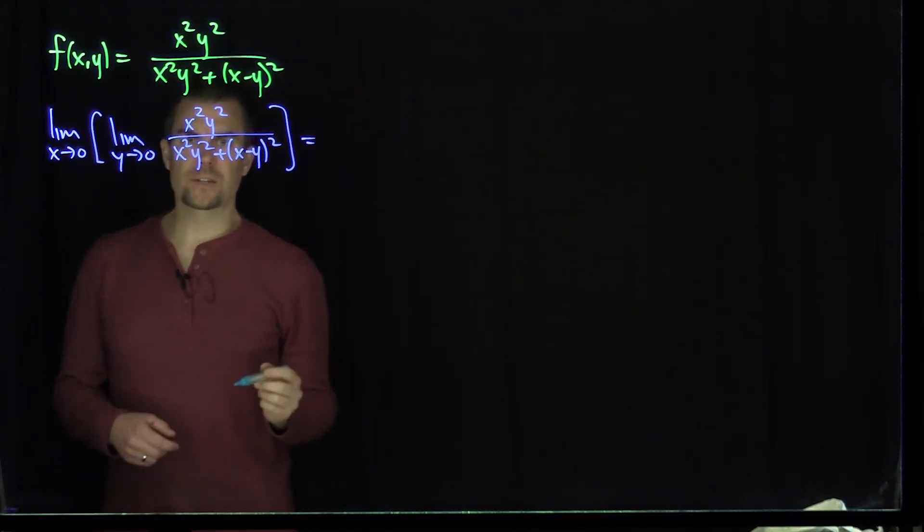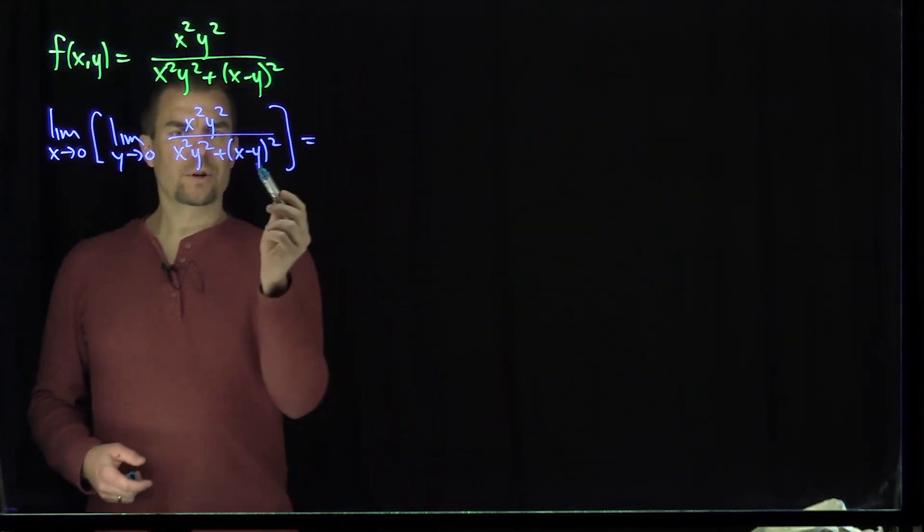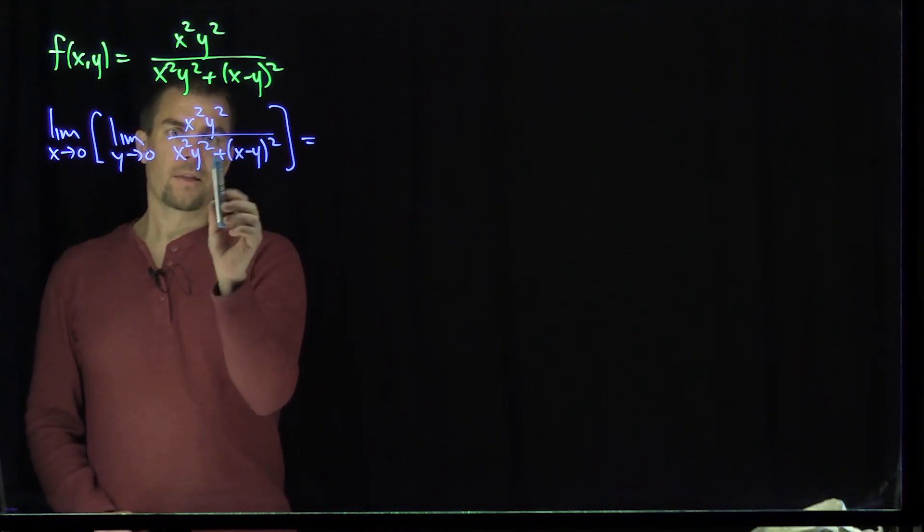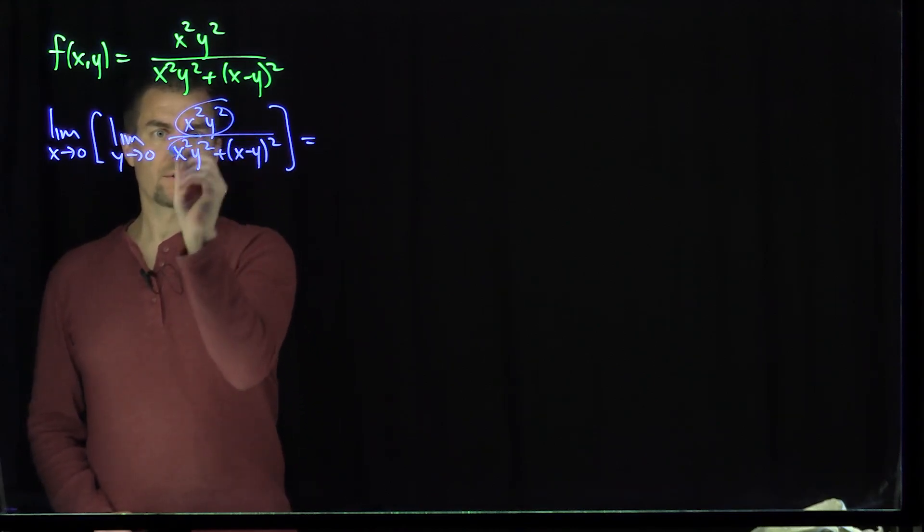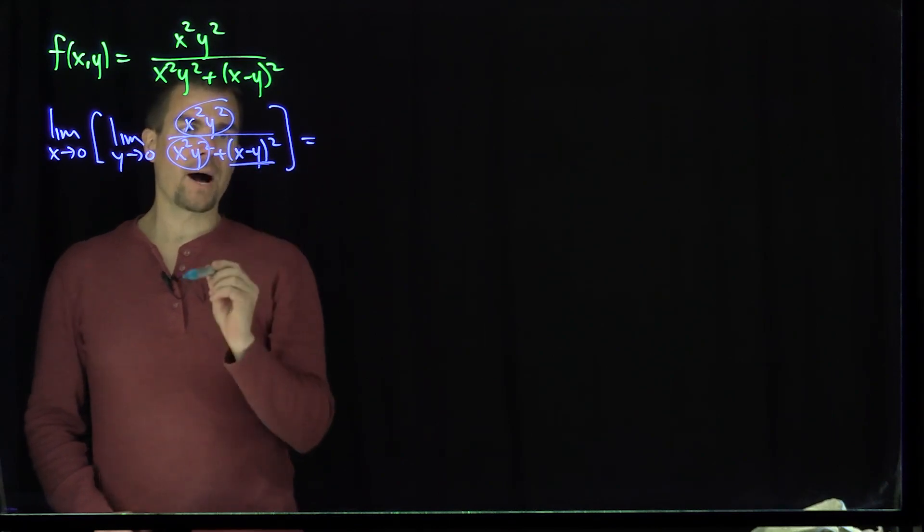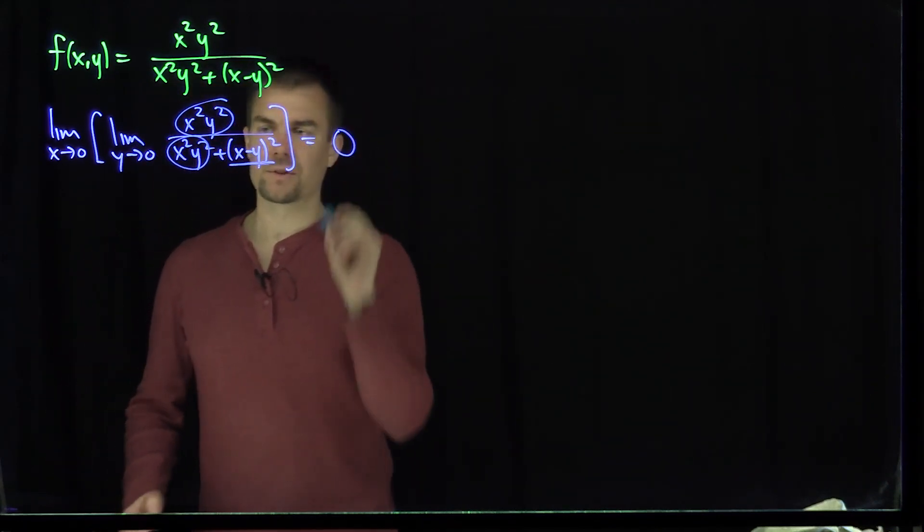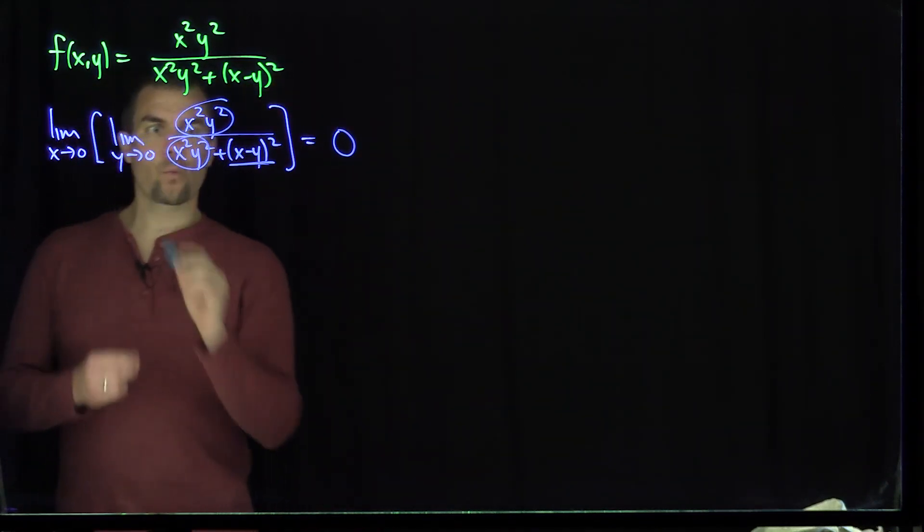And what we can see over here is as y goes to zero, the numerator is going to go to zero, but if x is fixed over here, then this term will go to zero, this term will go to zero, and this term will be a positive x squared, so this limit will be equal to zero. So that's what happens if y goes to zero first.